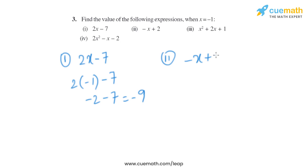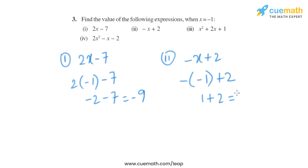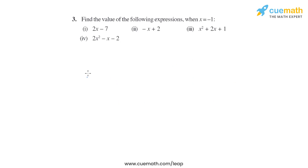As we know the value of x is minus 1, so it will become minus minus 1 plus 2, which is the same as plus 1 plus 2, which equals 3. Now let's move on to the third part.